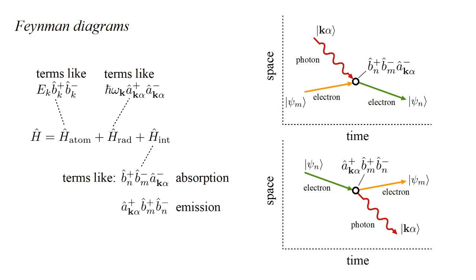To describe this emission process, the interaction Hamiltonian needs terms like a-hat k-alpha-plus b-hat m-plus b-hat n-minus. This destroys the n-th orbital electron, creates the m-th orbital electron, and creates the photon.